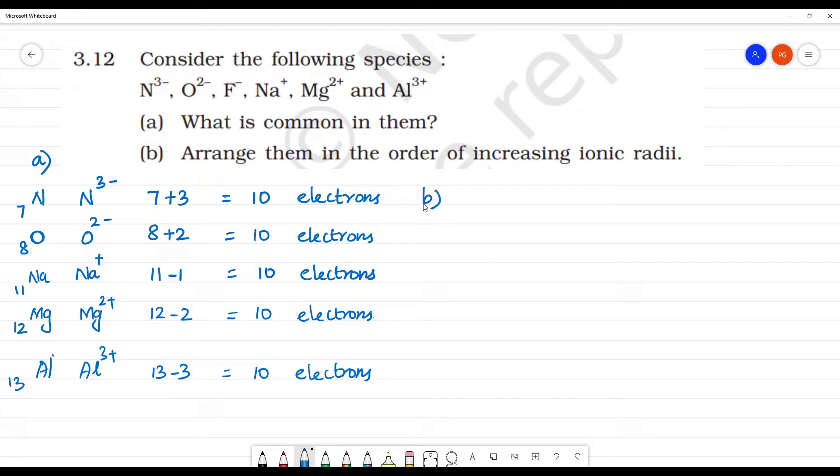Next, part B. Arrange them in the increasing order of ionic radii. The important principle: Increase in charge of cation decreases ionic radius.